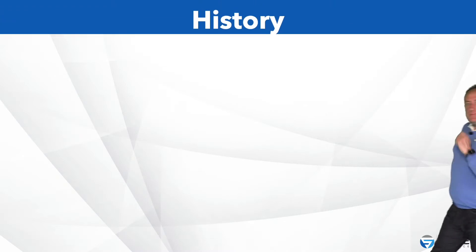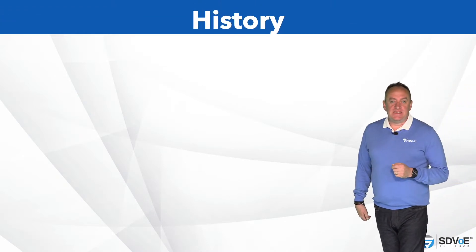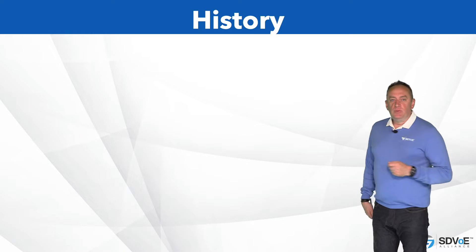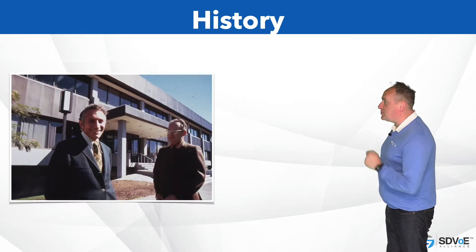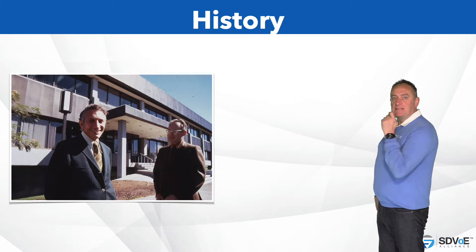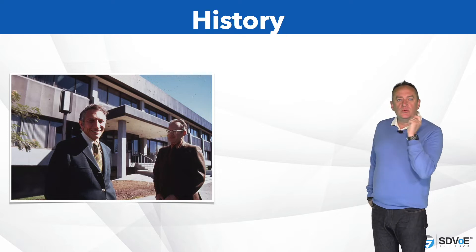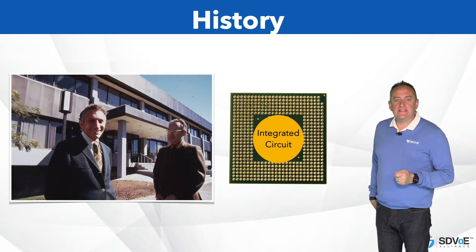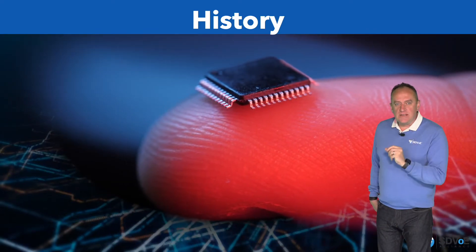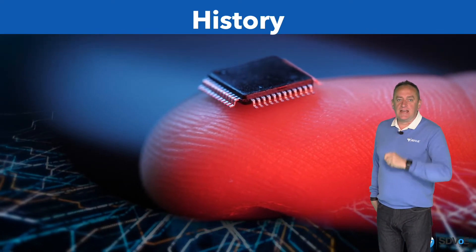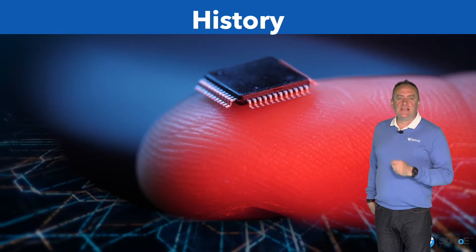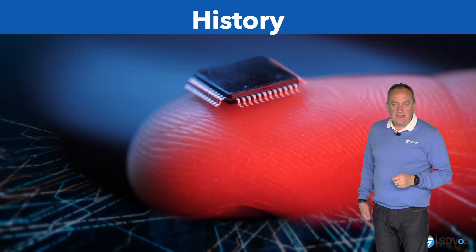Let's begin by explaining why the chipset is there in the first place. The microchip was invented by these two chaps in 1959 and contained computer circuitry called an integrated circuit — tiny little electronic transistors and interconnects on a wafer-thin piece of silicon smaller than your fingernail.